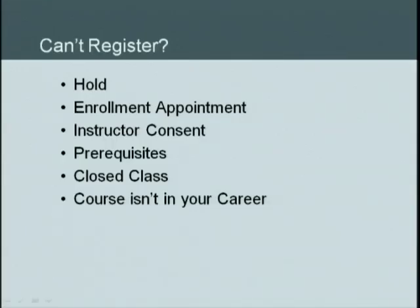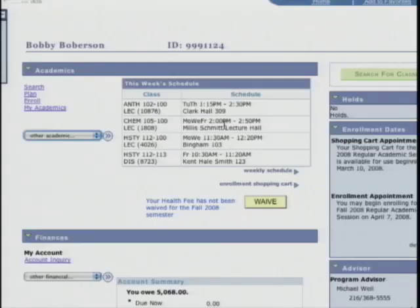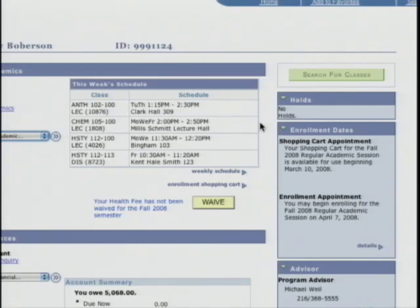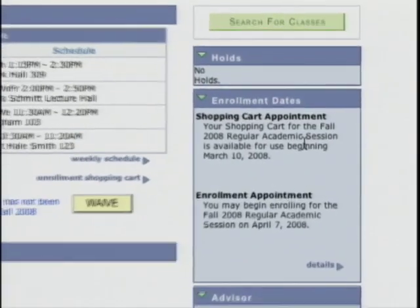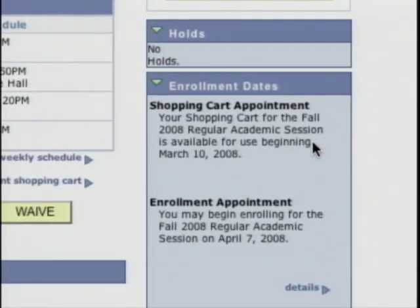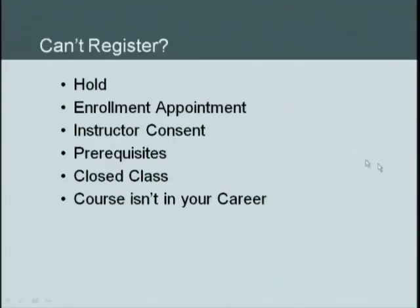That's the registration process. If something happens and you can't register, there are a few reasons that could be happening. Number one, you may have a hold on your account — a registration advising hold or a past due balance hold. You can check that on the student center front page in the holds box. You also want to check your enrollment appointment, visible in the enrollment dates box. Make sure you've met any prerequisites required for a course. If a class is closed you won't be able to get in, but you can request a permit from a professor. Also, if a course isn't in your career — for example, an undergraduate trying to enroll in a graduate course — the system won't allow that automatically; you'll need permission from the appropriate dean or registrar.